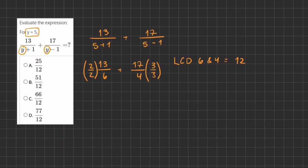So we have 2 times 13, which gives us 26, divided by 12, plus 17 times 3, which gives us 51, divided by 12.